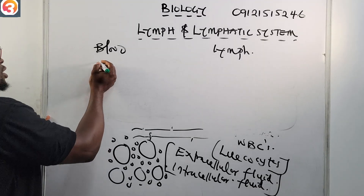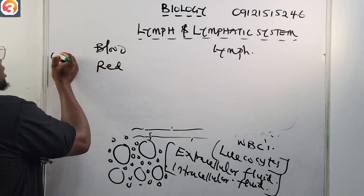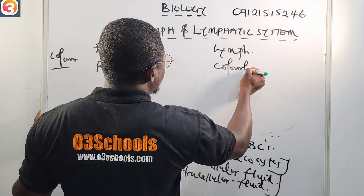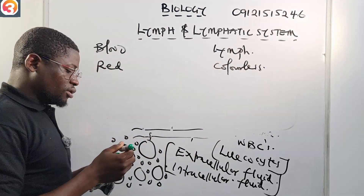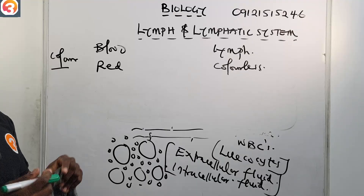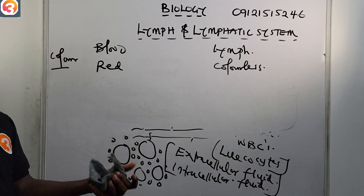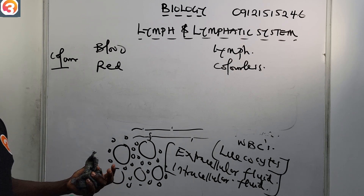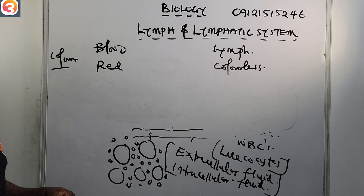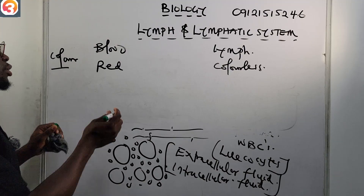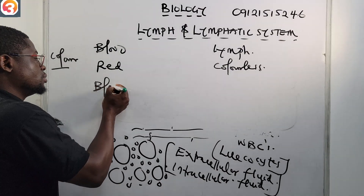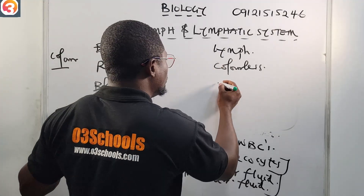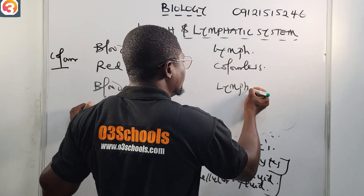In terms of color: blood is red, while lymph is colorless — it is a transparent fluid. In terms of movement: blood moves through blood vessels, while lymph moves through lymphatic vessels. In terms of function: blood transports oxygen (O2), carbon dioxide (CO2), and nutrients. The function of the lymph is to transport absorbed or digested fats.